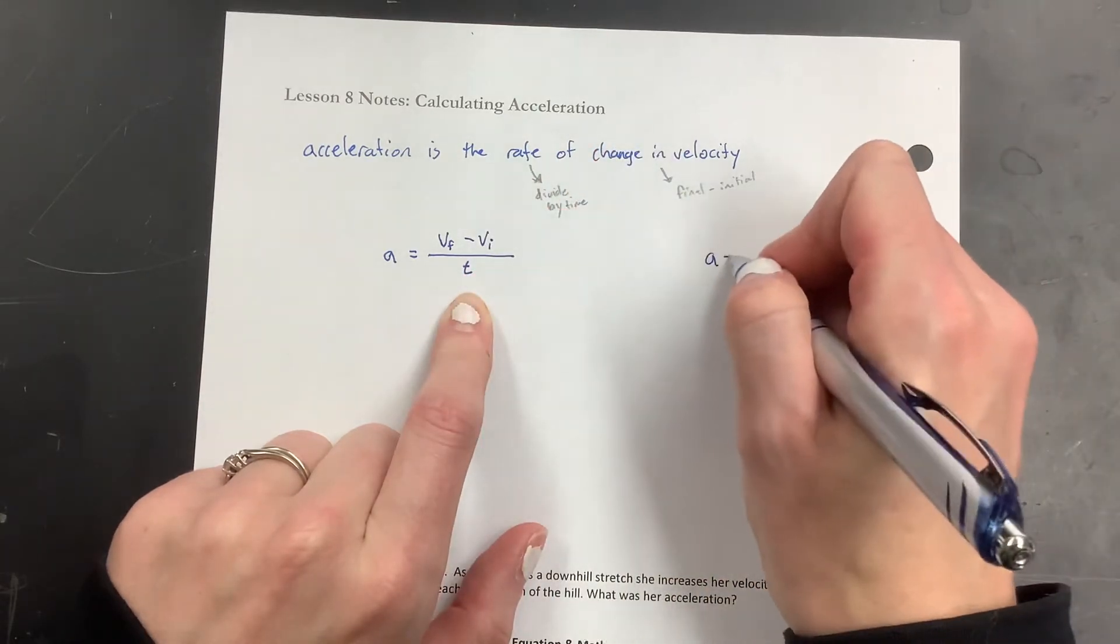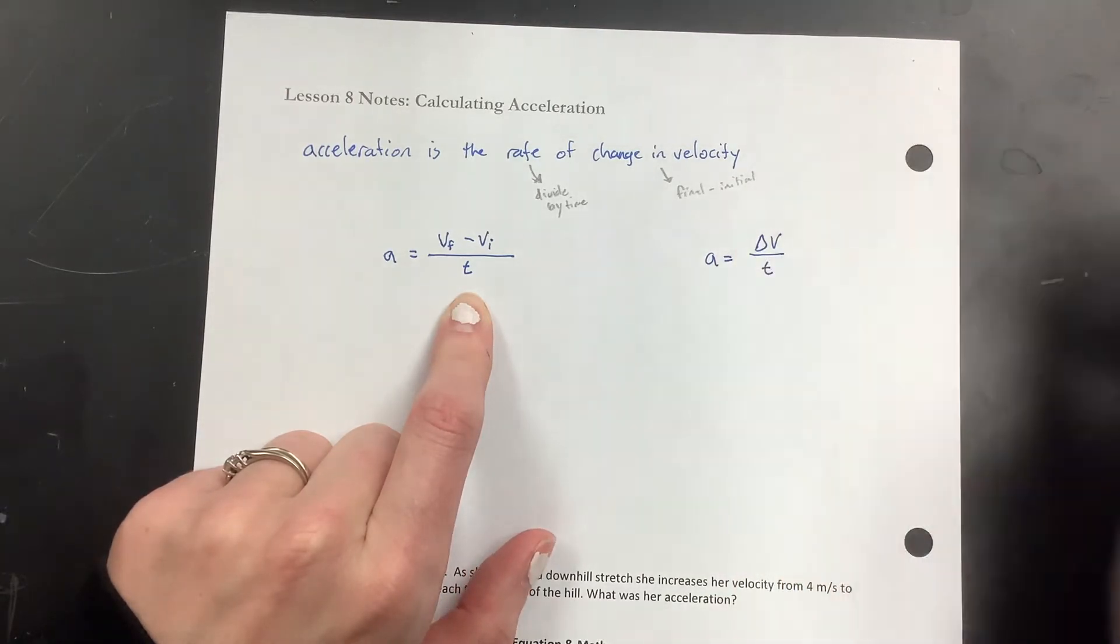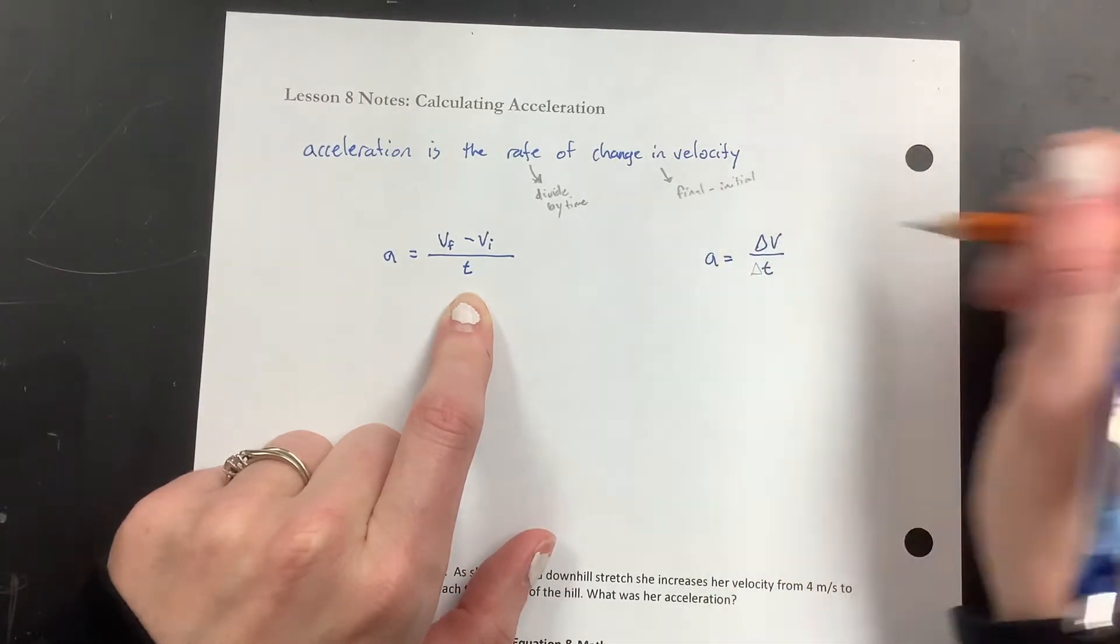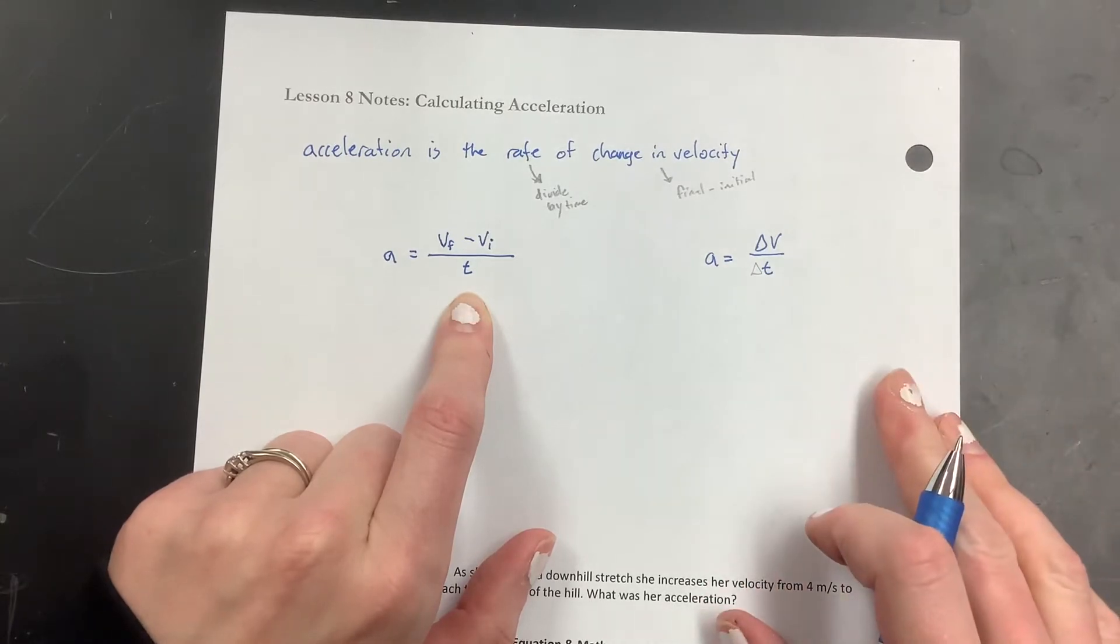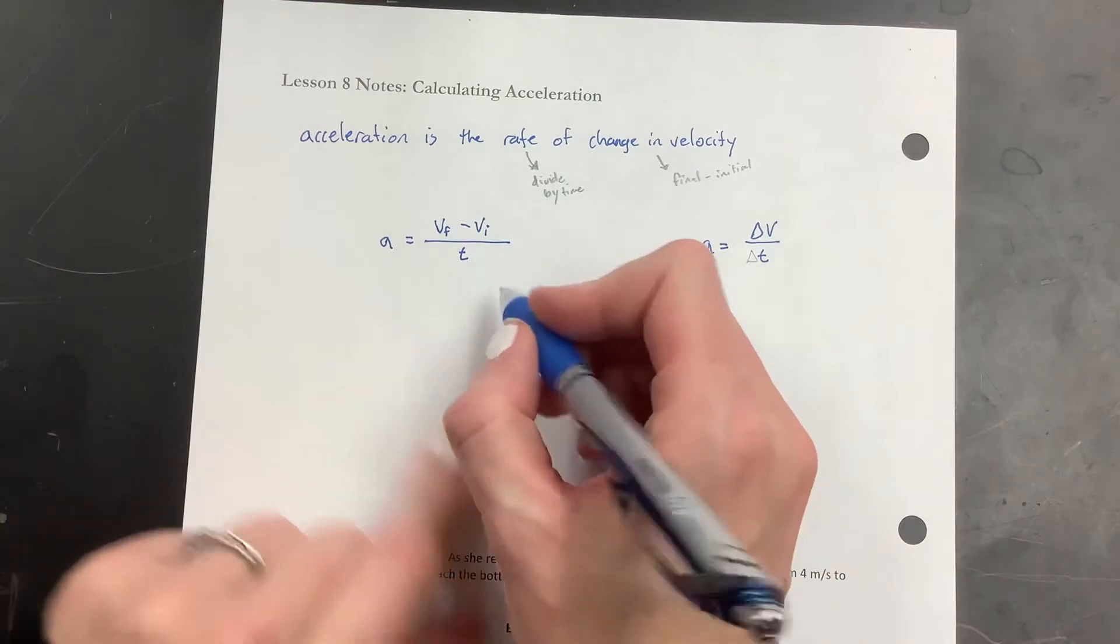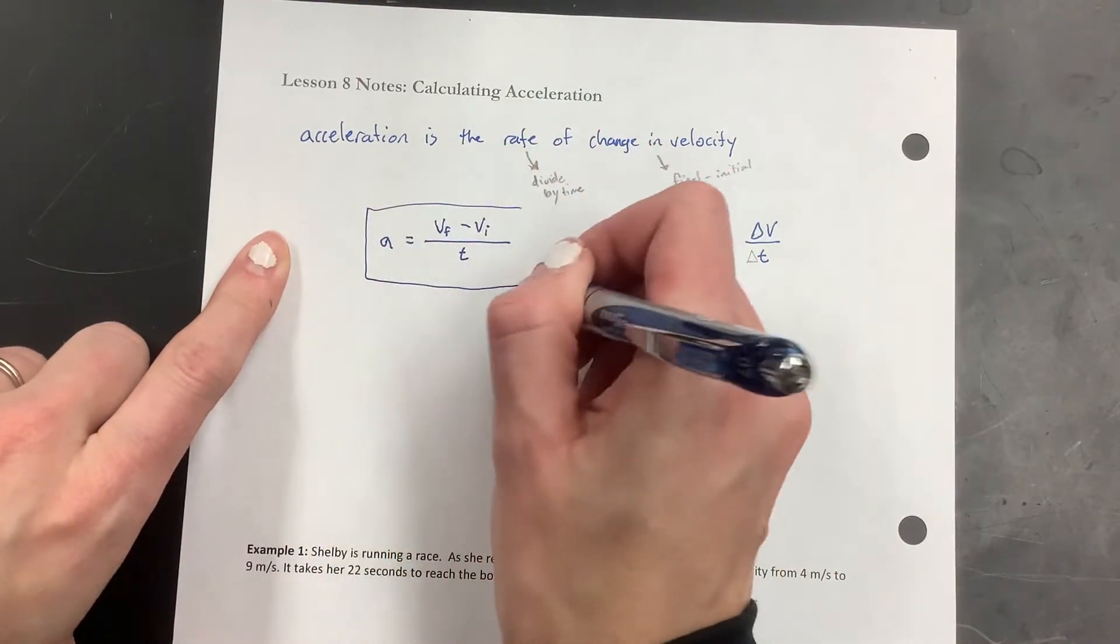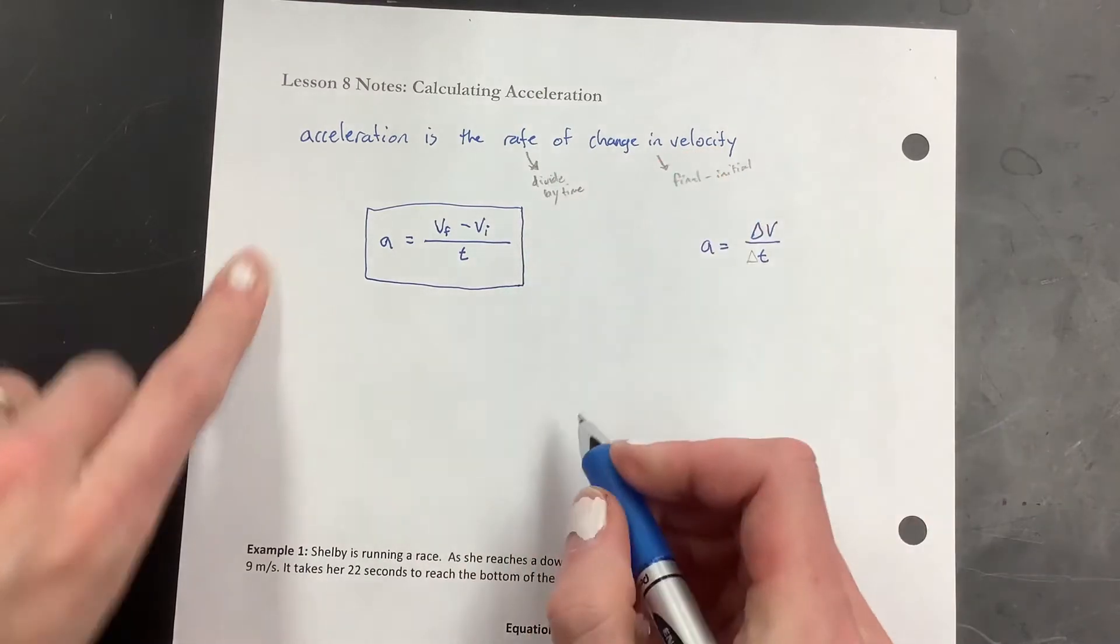Sometimes you might see it looking like this, which means the same thing. Sometimes people write a triangle right here for change in time, and that's totally okay as well. It's just a different way to write it. Sometimes we might need to know, so I'm going to put a box around this. That one right there is one that you're going to use a lot.